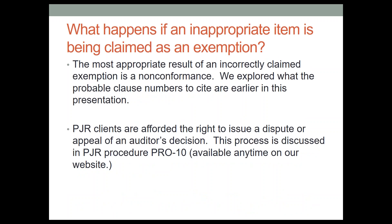What happens if an inappropriate item is claimed as an exemption? The most appropriate result of an incorrectly claimed exemption is a non-conformance. If a non-conformance is issued, you do have the right to issue a dispute or an appeal of an auditor's decision. That process is discussed in PJR Procedure Pro-10, which is available anytime for download on our website.